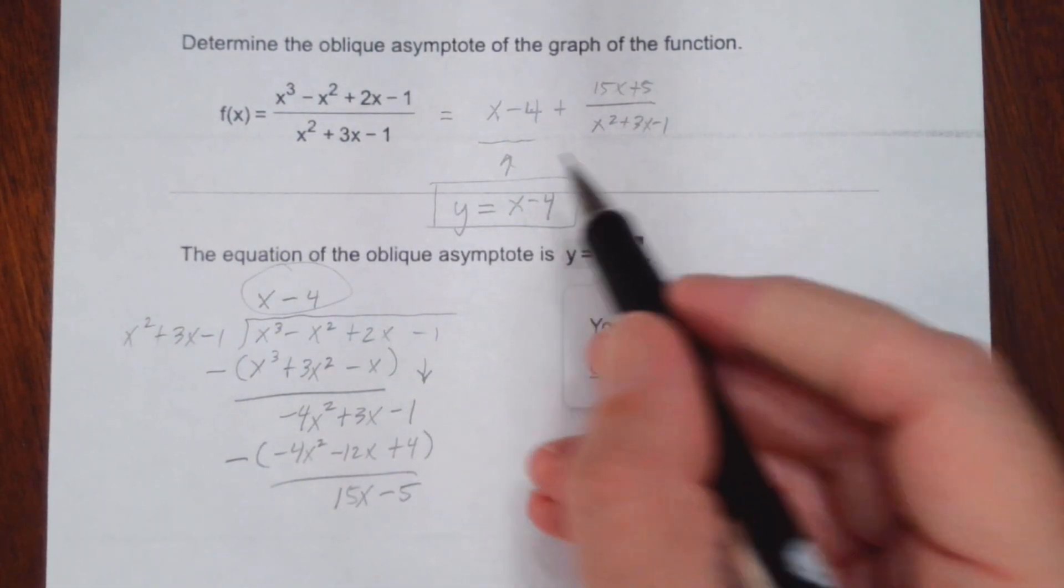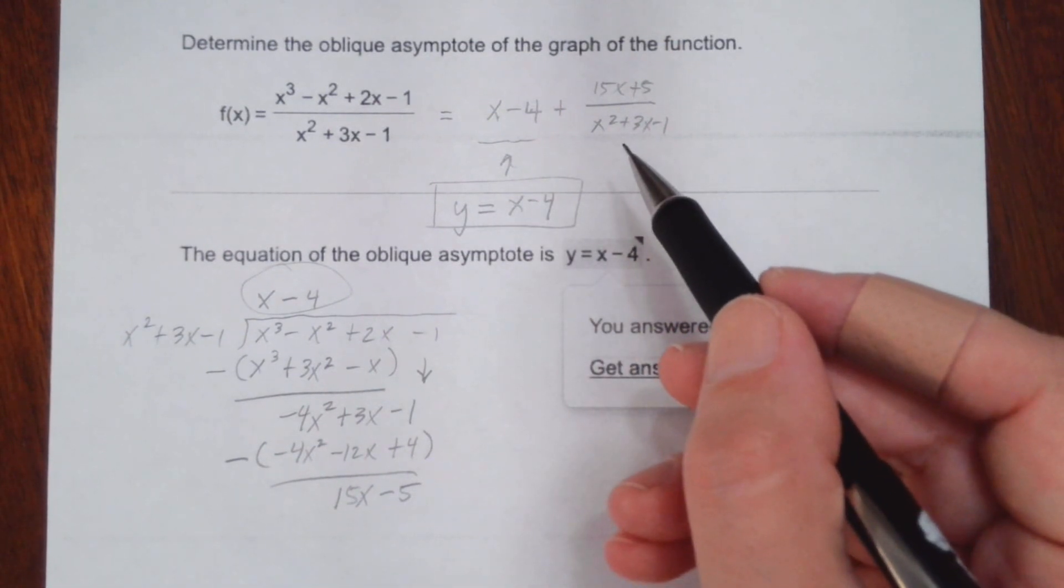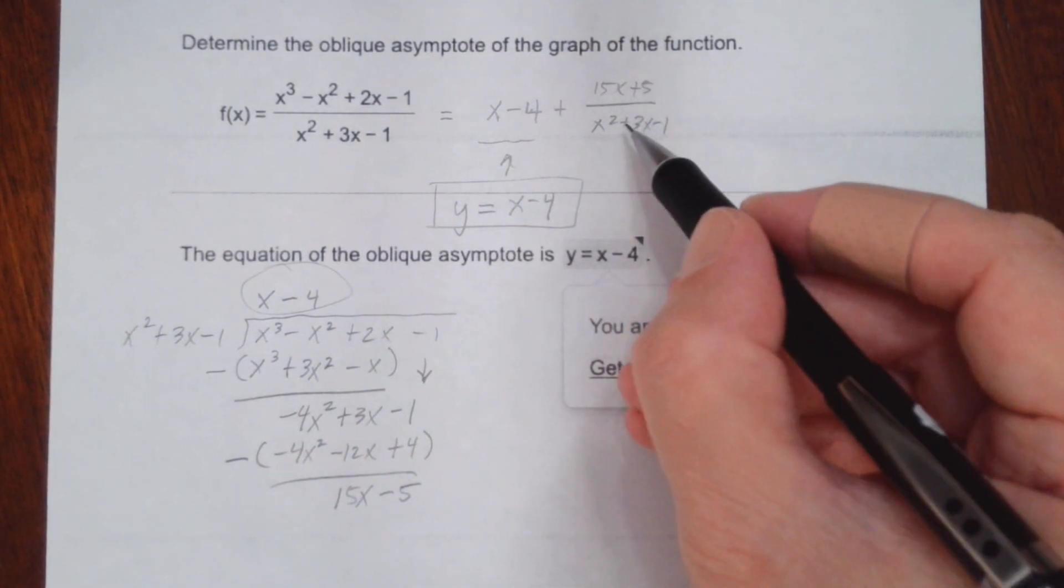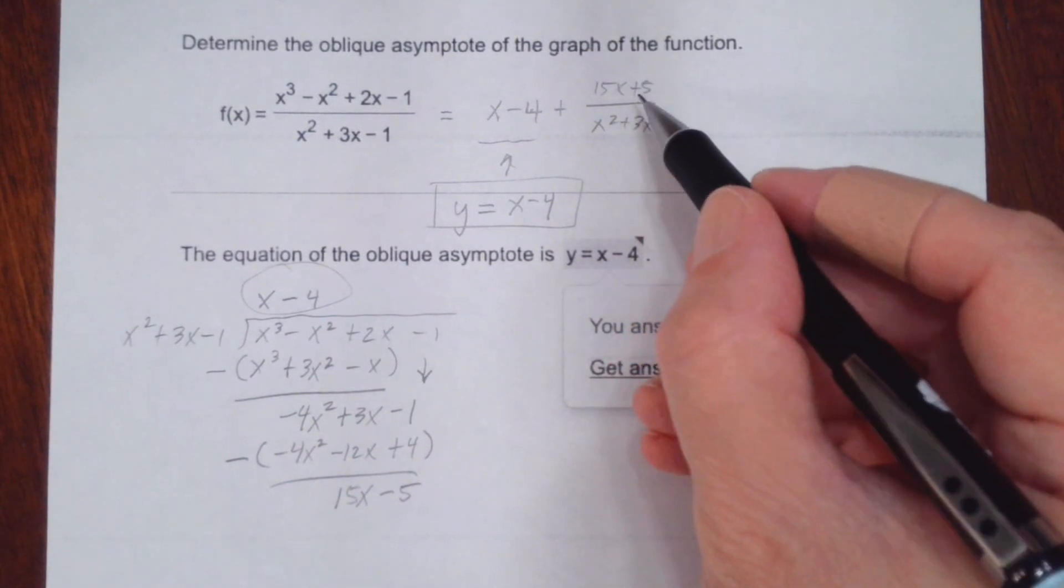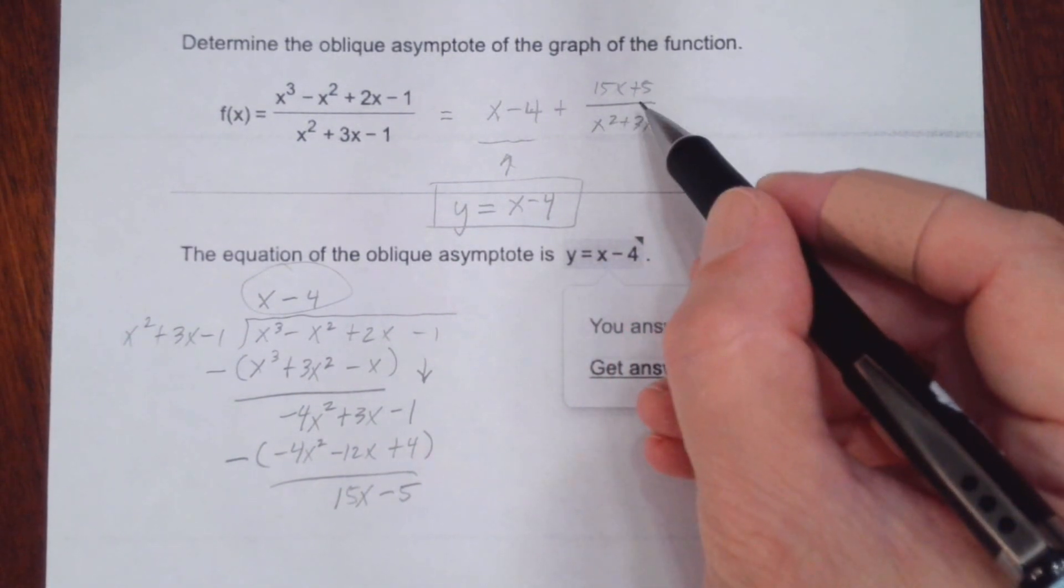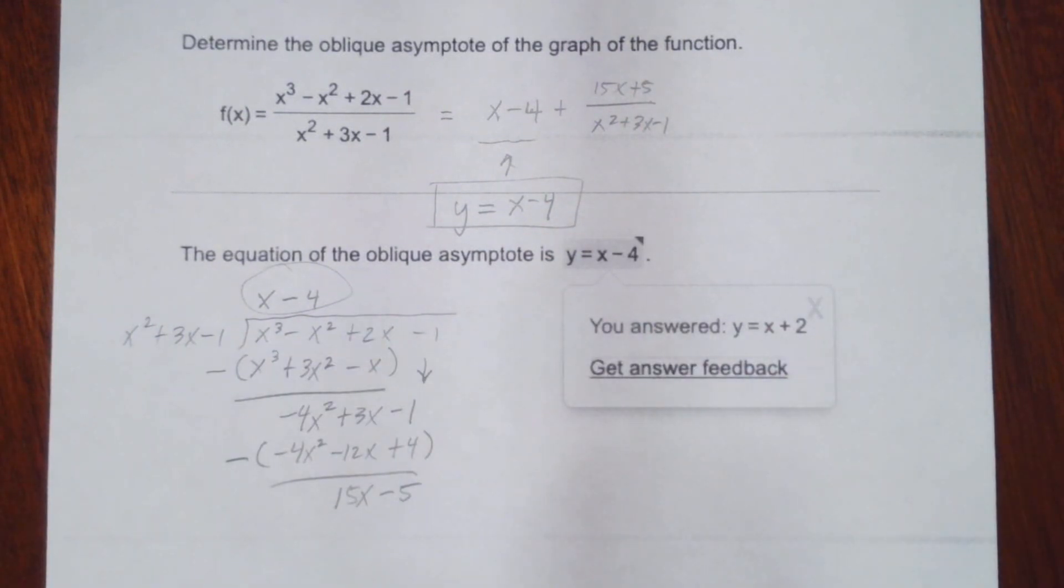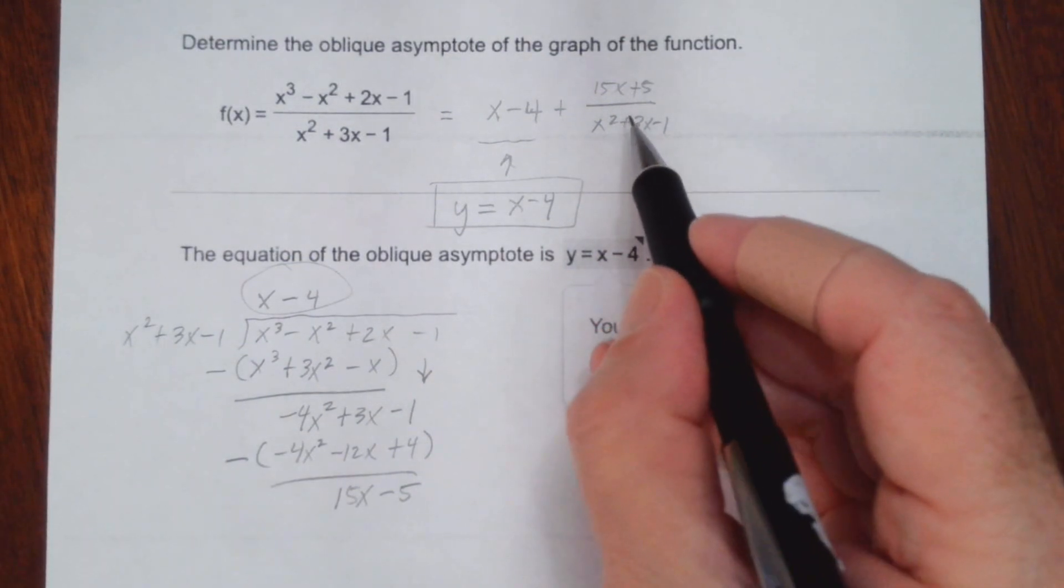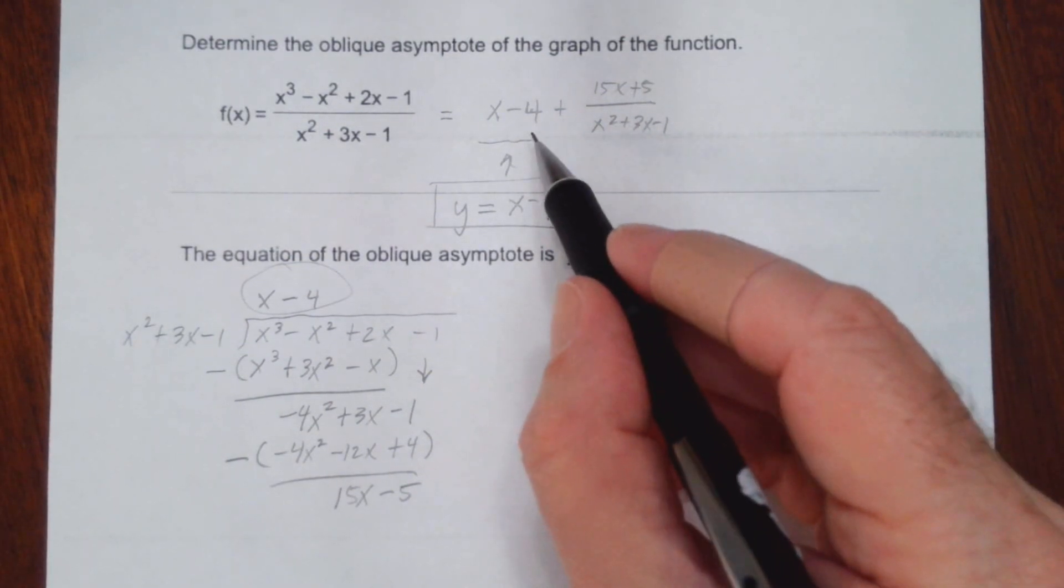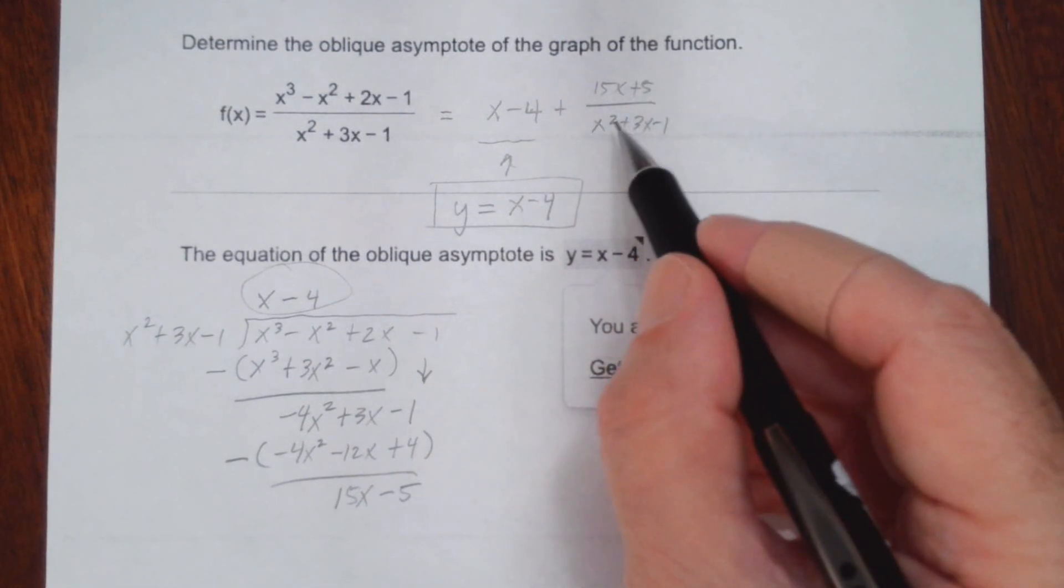The basic idea is, as x gets really big, positive, or really big negative, this denominator gets much bigger than the numerator, and this fraction approaches zero. So as x is getting really big on the ends, or really big negative on the other end, this graph approaches y equals x minus 4 because this goes to zero.